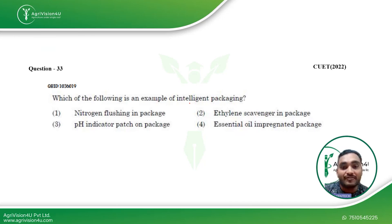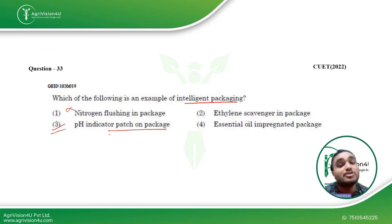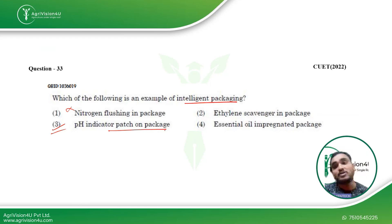Nitrogen flushing in packaging is an example of MAP. Ethylene scavengers in packaging is your active packaging. Essential oil impregnated package is also part of active packaging. A pH indicator patch on a package continuously reacts with compounds present inside the package and in real time shows you the condition of the food inside. So this is a very good example of intelligent packaging, and pH indicator patch on package is the best option for this question.